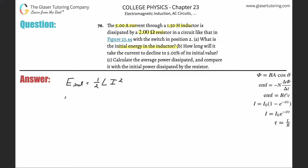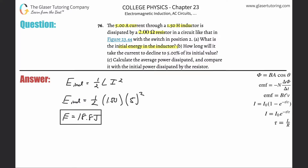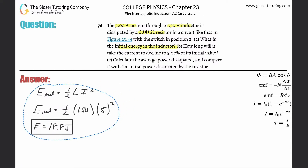We need the inductance and the current to find the energy. They gave us a 1.5 henry inductor with 5 amps of current. So the energy stored is 0.5 × 1.5 × 5² = 18.75 joules — approximately 18.8 joules — stored with five amps of current flowing through it.